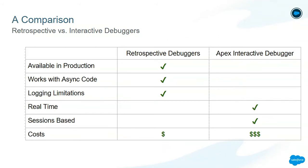However, retrospective debuggers do run into the logging limitations of the debug logs. So if your debug log hits the two megabyte limit, you might not have the ability to step through your code line by line and instead might have to step through method by method. On the other hand, the interactive debugger only works in sandbox environments and cannot debug asynchronous code — only triggers and controllers on pages. But the main difference is that it works in real time, so you can step through your code to your heart's content. The interactive debugger is also session-based, so at a given time you can only have one active session per sandbox, while with the retrospective debugger you can debug as much as you want. And there is a cost associated with each, although the interactive debugger is much more expensive.